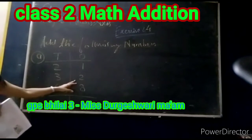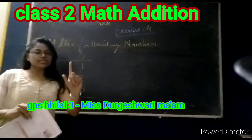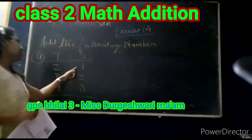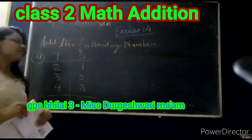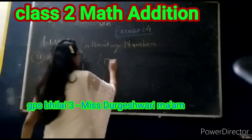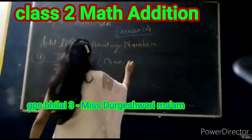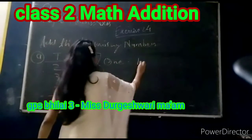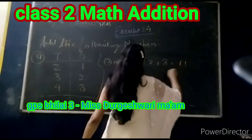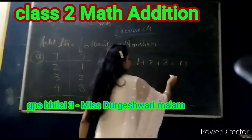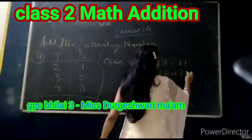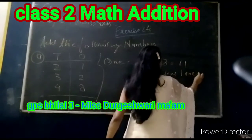8 plus 2: 8, 9, 10, then 1, then 11. In the ones place, 1 plus 2 plus 8 becomes 11, which means 1 ten and 1 one.